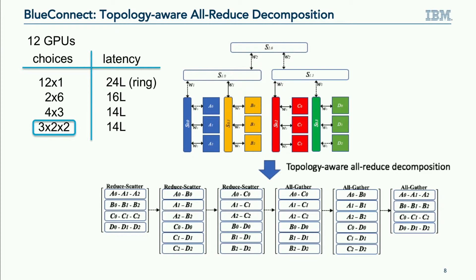My obvious best choice is the configuration that best maps to the network topology, because this avoids using poor bandwidth as late as possible. The key idea is to do as many operations as possible with higher bandwidth first, before touching the poor bandwidth higher up in the network hierarchy. With a three-dimensional hypercube, I have three stages of reduce-scatter and three stages of all-gather, each with multiple parallel rings whose size is based on the hypercube dimension.